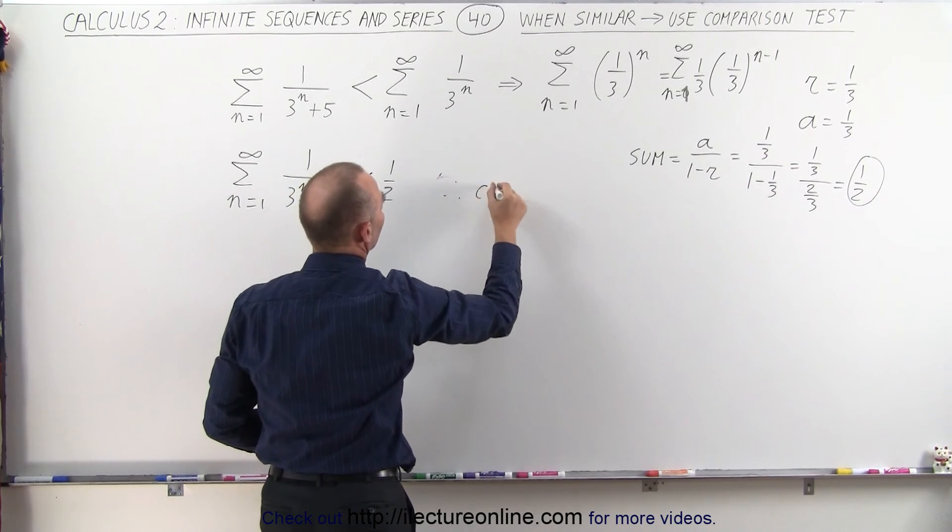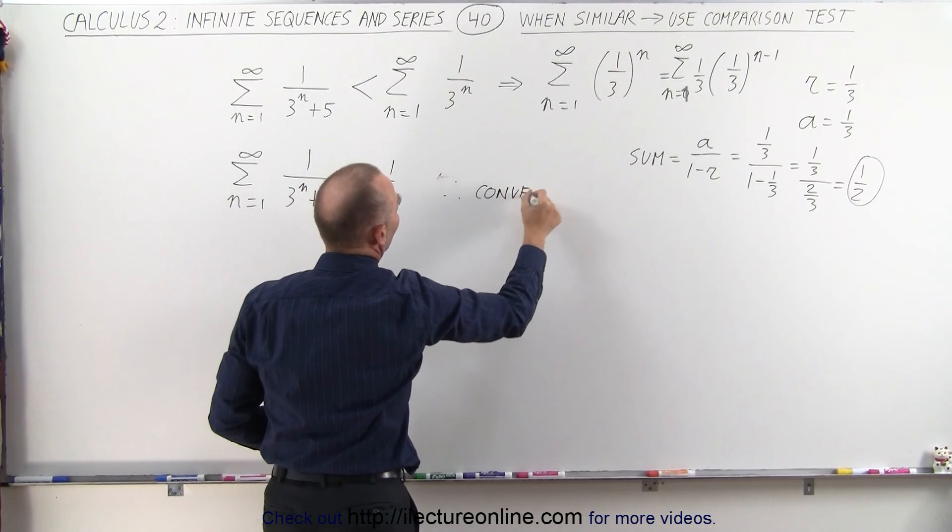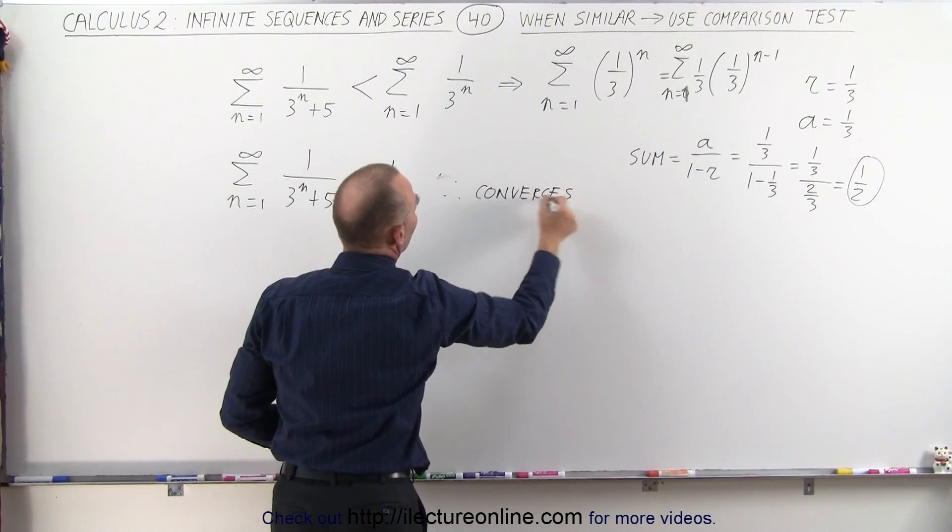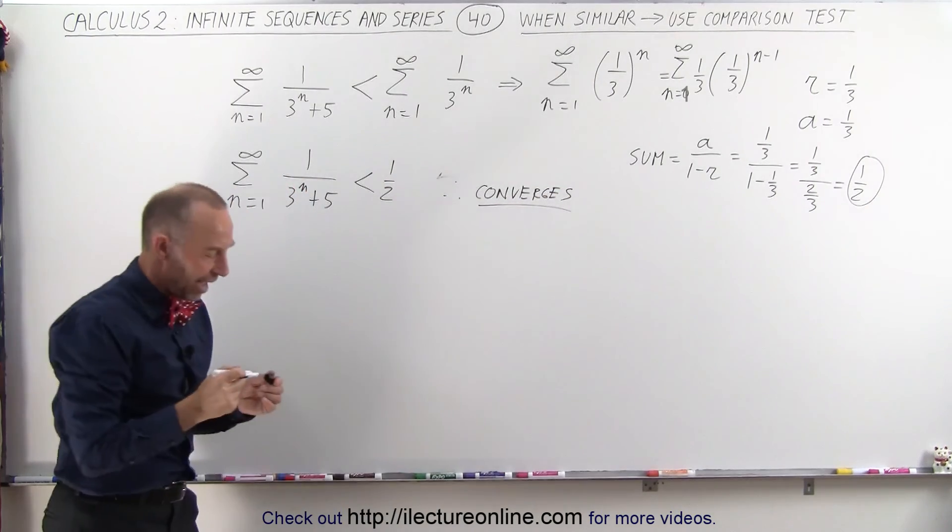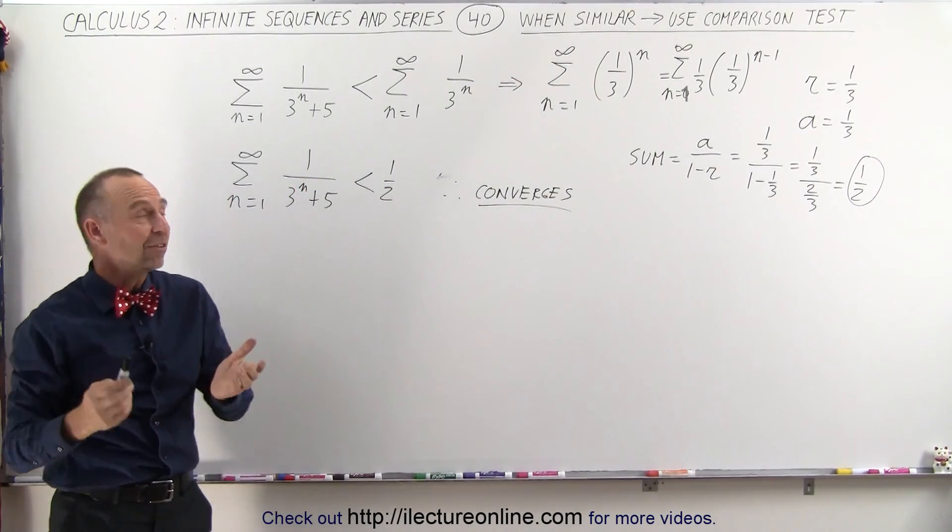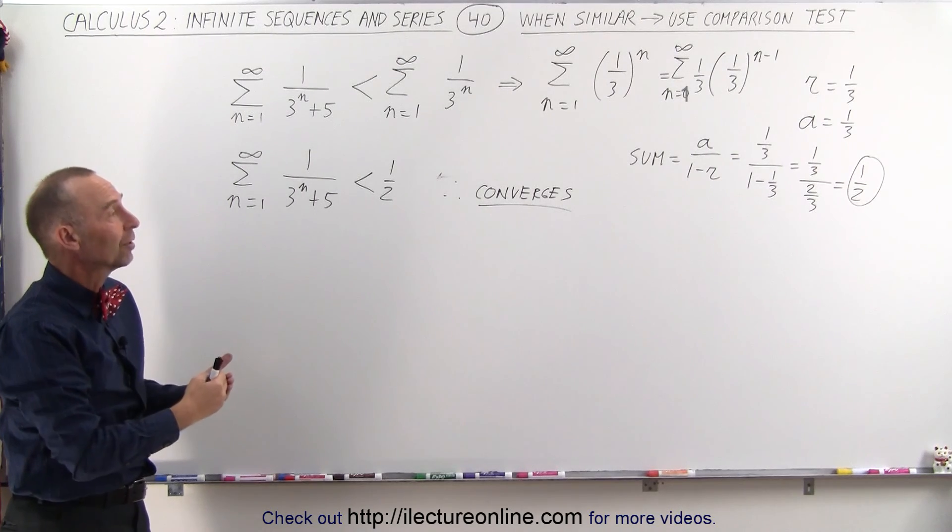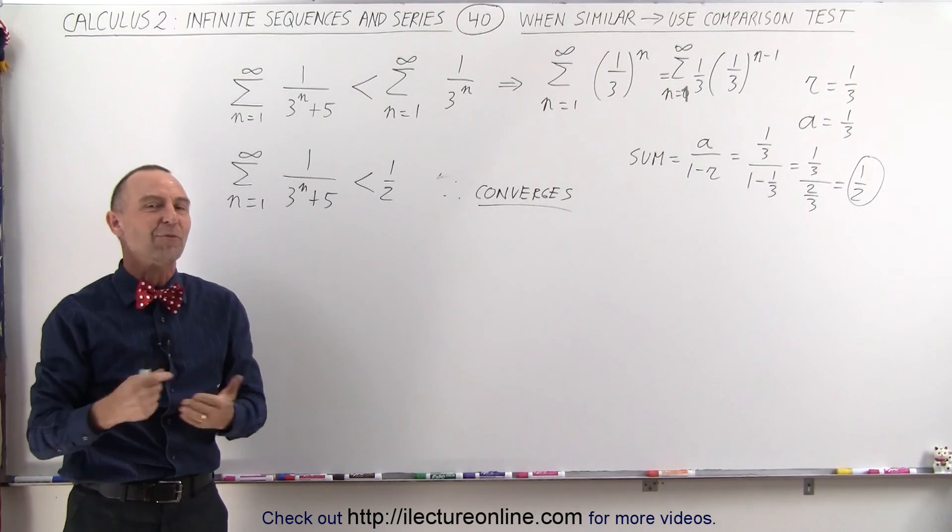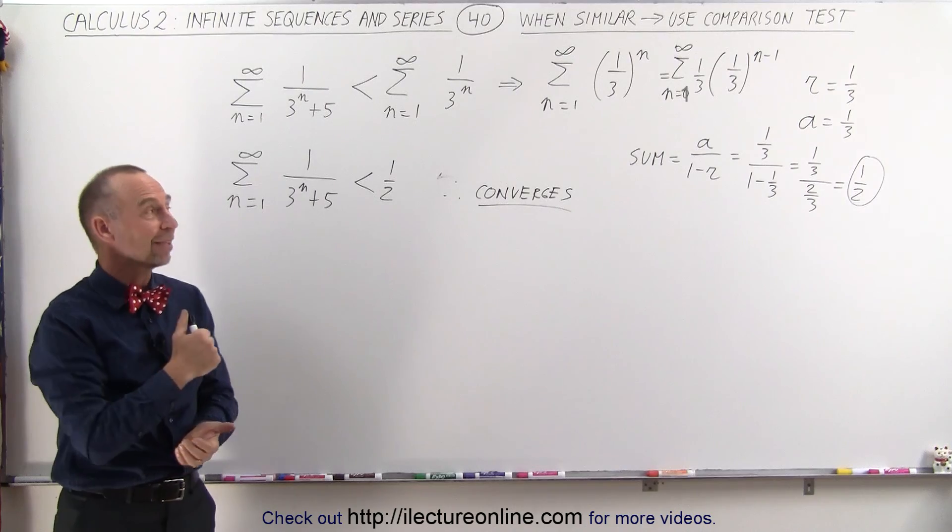Therefore, the series converges, and we know that the sum must be less than 1 half. So using a comparison test to something you're familiar with can quite often help you solve one you're not familiar with. And that's how it's done.